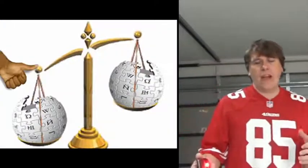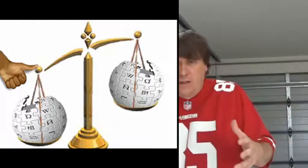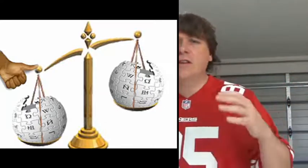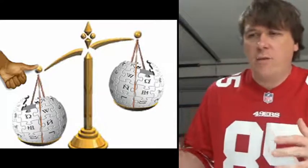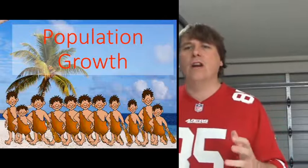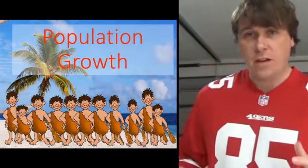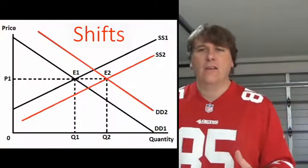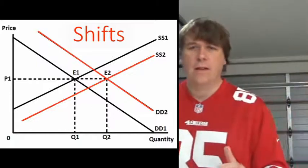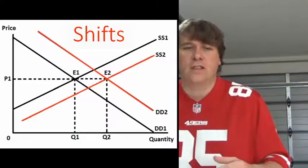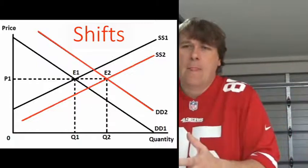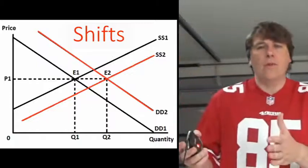What happens if an event disrupts that equilibrium? Remember, equilibrium is a balance where demand and supply equal each other, but something could happen to change that. Here I've assumed population growth. When you have a larger population, the first thing you'd think of is an increase in demand. On the graph we show this as a shift in the demand curve to the right — if every person demands two bananas, doubling the population effectively doubles the demand.